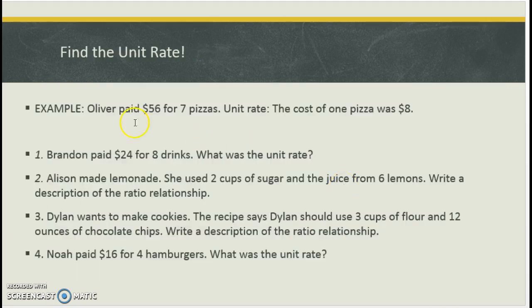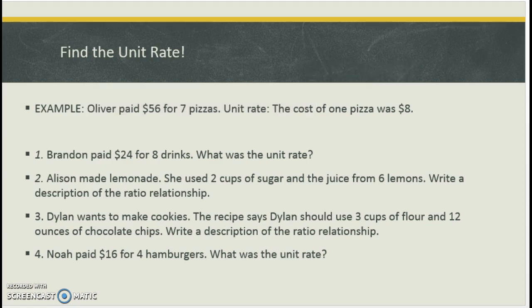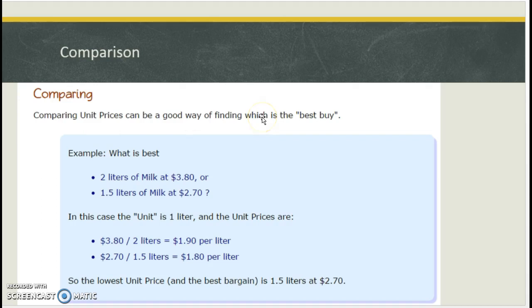So a quick example. We have someone named Oliver. He's going to pay $56 for 7 pizzas. Unit rate, $8 a pizza. So that's some questions below to take a look at this. This goes back to rate and ratio, which I know we talked about.